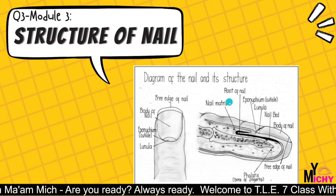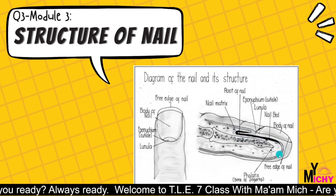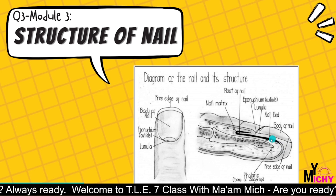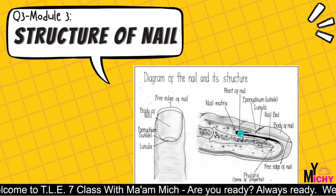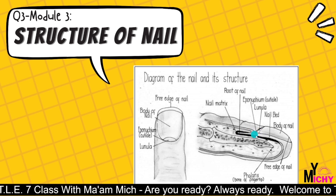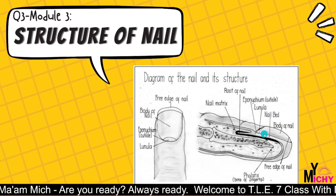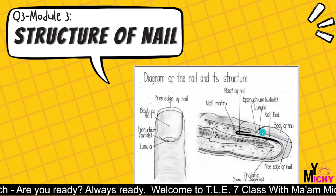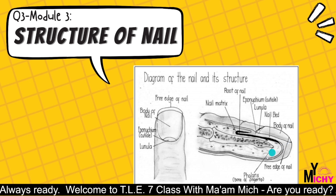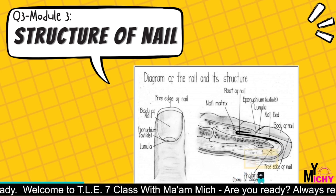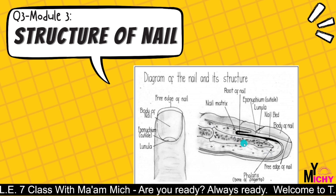We have the nail matrix, where the blood flows. And then we have the root of nail, the nail bed where the body of nail lies, and the phalanx — the bone of the fingertip.